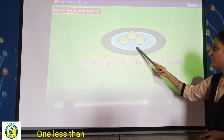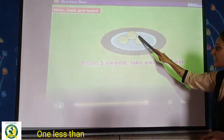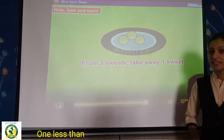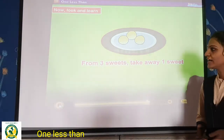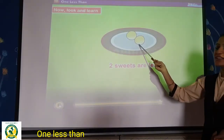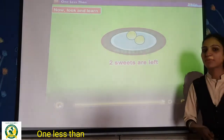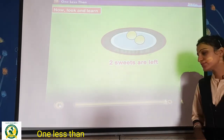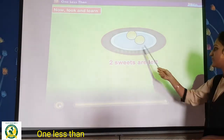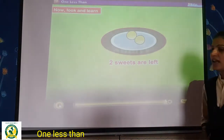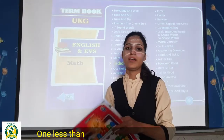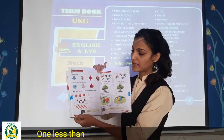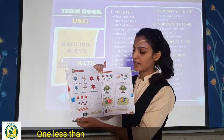From three sweets, take away one sweet. How many sweets are left? Two sweets are left. You took one from three sweets, so two sweets remain. Now turn the page — next page is page number 160.